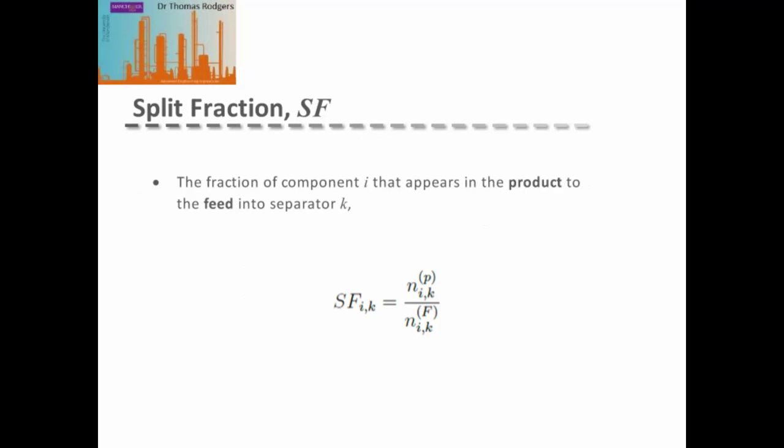For separations, feed components are partitioned between the products according to a split fraction. The split fraction for a component I in a separator K is given by the fraction found in the first product of the component I that we are interested in, divided by the amount of that component in the feed.